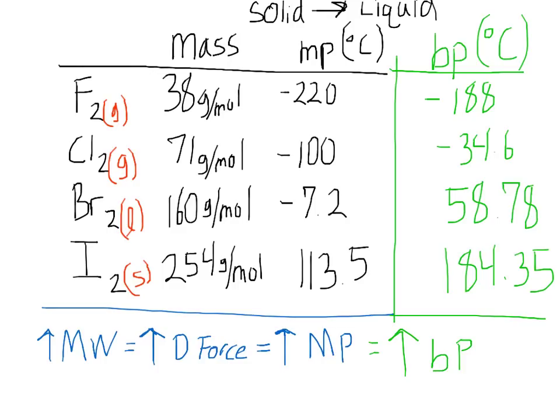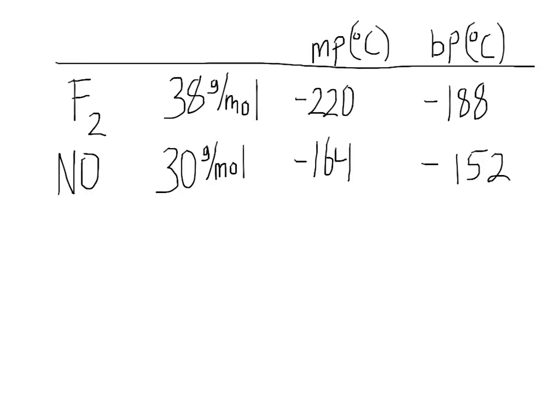Alright, so once again I paused it and wrote all this out so you can jump straight to it. We're going to compare fluorine and NO — the melting point and boiling point of these two. If we look at the molecular weight, fluorine is a lot heavier than the NO. So you would assume that fluorine is going to have stronger dispersion force and therefore hold itself together a lot tighter than the nitric oxide. But if you look at this, the nitric oxide actually has a higher melting point and boiling point than the fluorine.